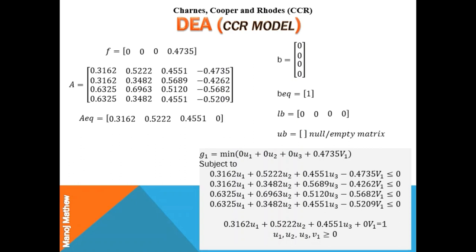After that, you need to create seven matrices, namely: F, which is the objective function; A, which is the coefficient of u1, u2, u3, and v1 on the left side of the inequality equation; b, which is the value on the right side of the inequality equation; Aeq, which are the coefficients of u1, u2, u3, and v1 on the left side of the equality equation; beq, which is the value on the right side of the equality equation; and lb and ub, which are the lower and upper bounds of the variables u1, u2, u3, and v1. All these values should be greater than 0 but the upper limit is not defined, so you will create a null or empty matrix for ub.